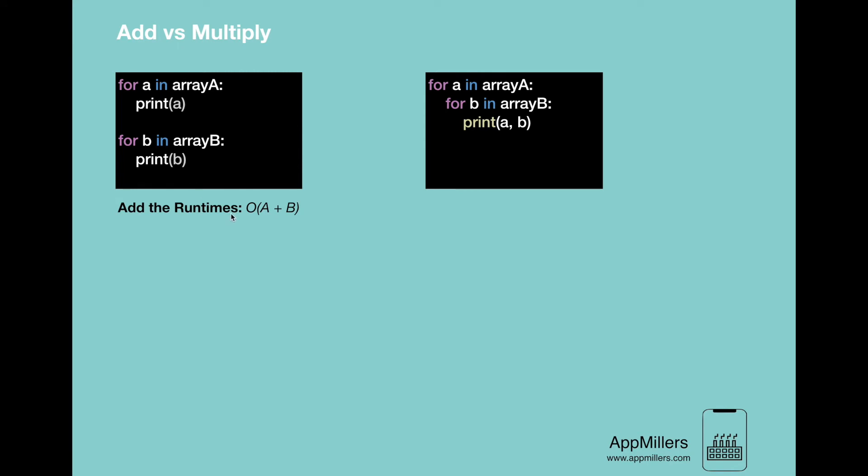On the other hand, in the example on the right, we do B chunks of work for each element in A. Therefore, the total amount of work is A multiplied with B.